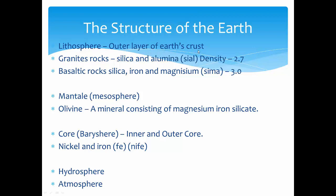Earth's structure contains the lithosphere, which is the outer layer of the Earth's crust. It is of two types. The upper layer is made of granite rocks — that is silica and alumina — represented as SIAL (SI for silica, AL for alumina). Its density is around 2.7. The lower lithosphere is basaltic rocks with higher density, made of silica, iron, and magnesium — SIMA. SIMA generally forms ocean surfaces while SIAL forms mountain and land surfaces.